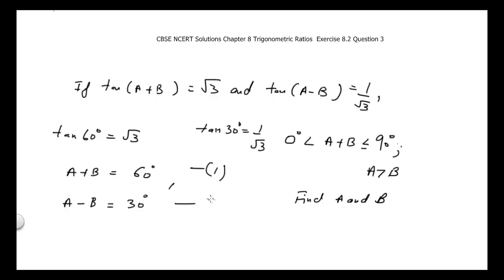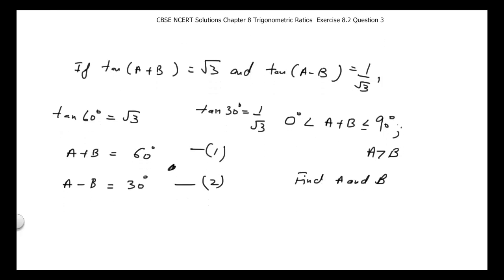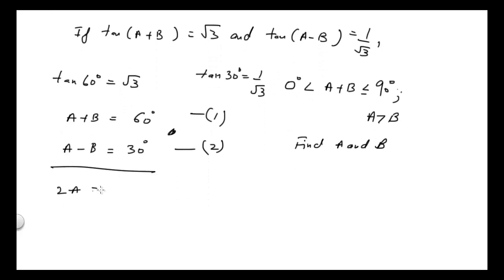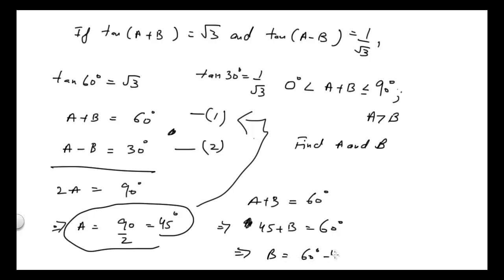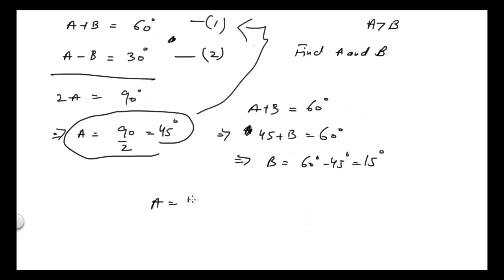Mark these as equation 1 and equation 2. Adding both equations gives 2A = 90°, so A = 45°. Substituting A = 45° into equation 1: 45° + B = 60°, therefore B = 60° - 45° = 15°. So A = 45° and B = 15°.